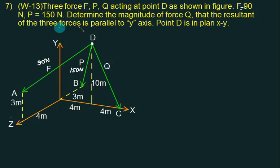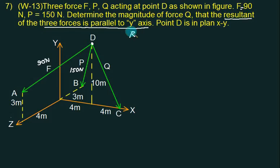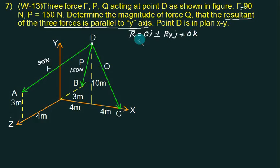What about the resultant? The resultant of the three forces is parallel to the Y-axis. This means R̄ equals 0·I, maybe plus or minus Ry times J, plus 0·K. You are sure about the X component and Z component — you are not sure about the Y component.